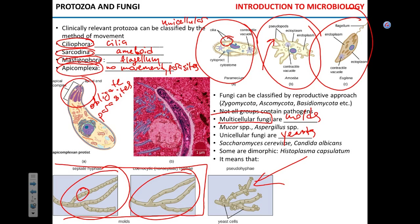What does dimorphic mean for fungi? It means a fungus can be both mold and yeast. A great example is Histoplasma capsulatum, the causative agent of Ohio Valley fever. It grows in the environment as a mold — usually in forests. When people cut trees, they aerosolize the spores; they inhale the spores, and when those spores enter the human lung, which is much warmer than outside, the fungus starts to grow as yeast instead of mold. It depends on temperature — that's why it's called dimorphic.